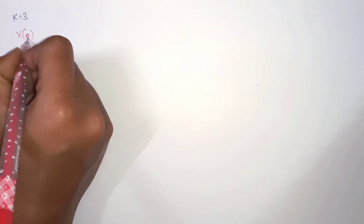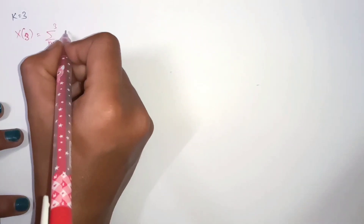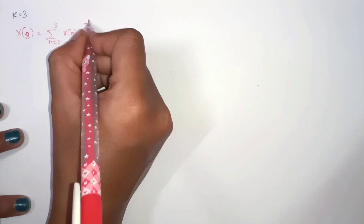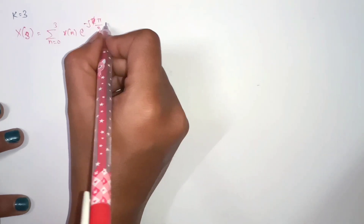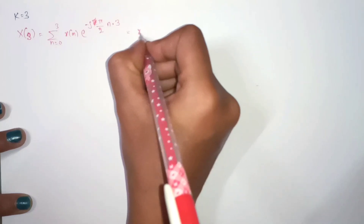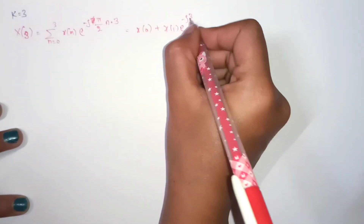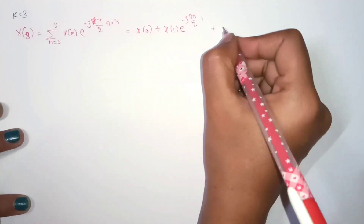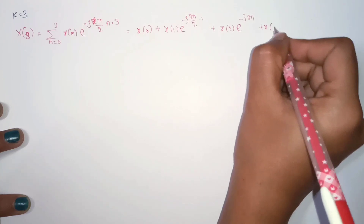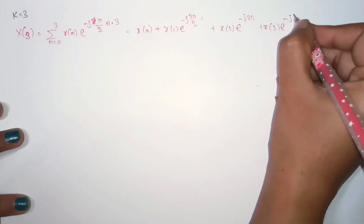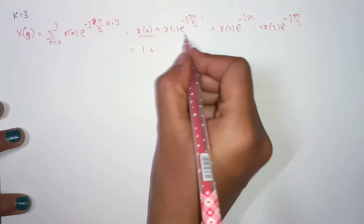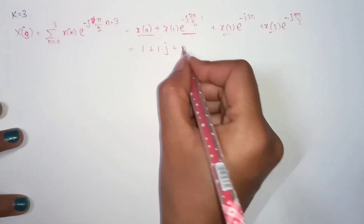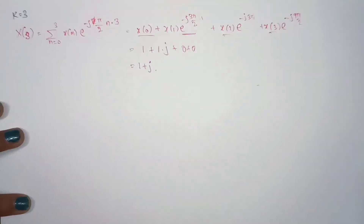For k equals 3, X(3) equals summation from n equals 0 to 3 of x(n) times e to the power of minus jπ/2 times n times 3. Expanding: x(0) plus x(1) times e to the power of minus j3π/2 plus x(2) times e to the power of minus j3π plus x(3) times e to the power of minus j9π/2. Since e to the power of minus j3π/2 equals j, and x(2) and x(3) are 0, we get X(3) equals 1 plus j.